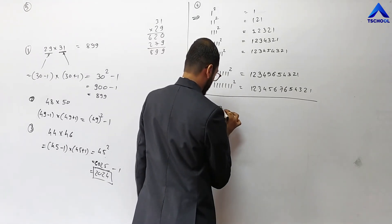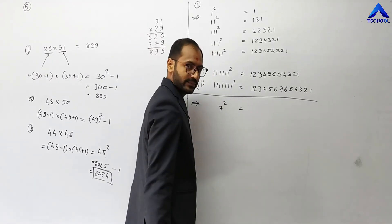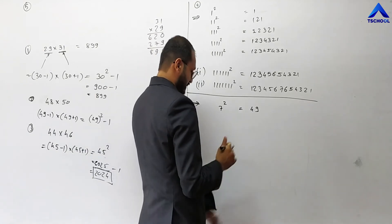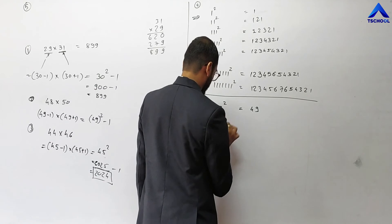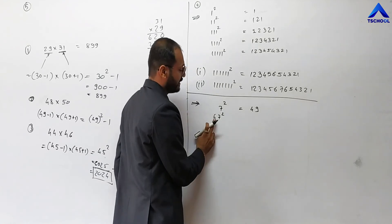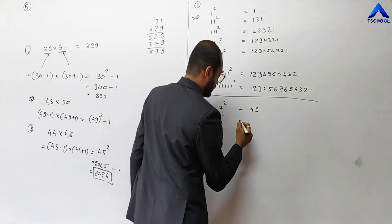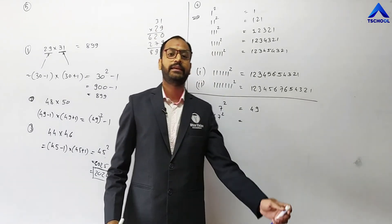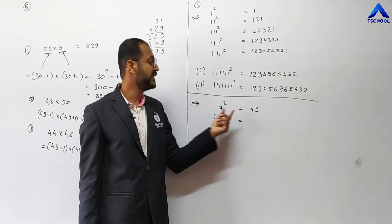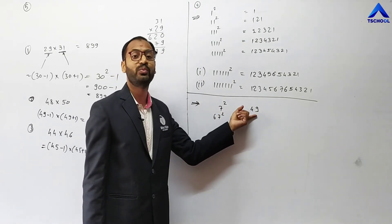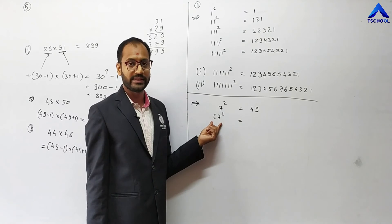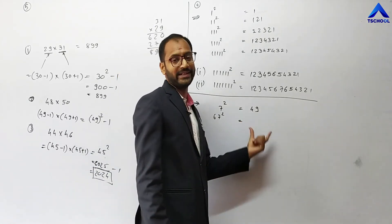Now another interesting pattern. The 7 squared is 49. What is 67 squared? Note that this digit 6 is one less than 7. Also, how many digits in the natural number determines how many digits are in the square: a 1-digit number gives a 2-digit square; a 2-digit number like 67 gives a 4-digit square.